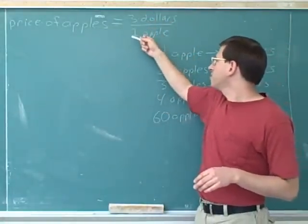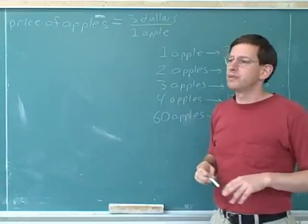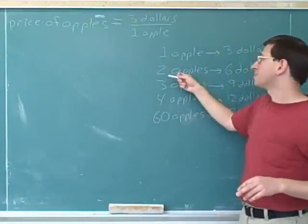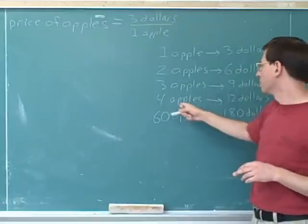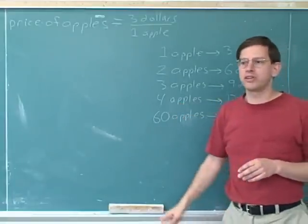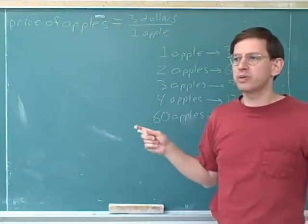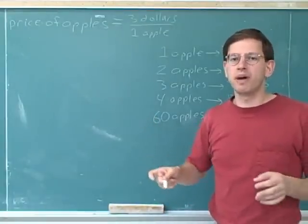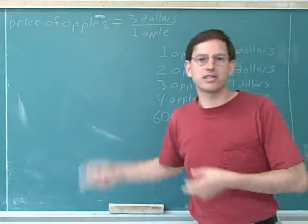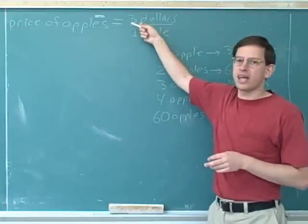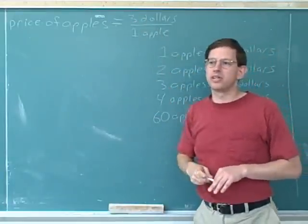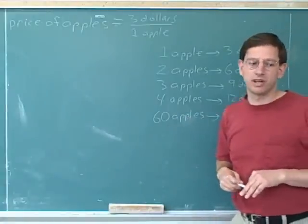This also shows us once again that ratio units are completely hypothetical. This is telling us that if you buy one apple it'll cost you three dollars, but that doesn't mean you're actually going to buy one apple. It might be that you're going to buy two apples — then it would cost you six dollars — or four apples, which would cost you twelve dollars, or 60 apples, which would cost you 180 dollars. And also keep in mind, it's totally possible that you might decide to buy no apples, and then it would cost you no dollars. So this does not tell us how many apples you're actually going to buy; it just tells you that if you bought an apple, it would cost you three dollars.